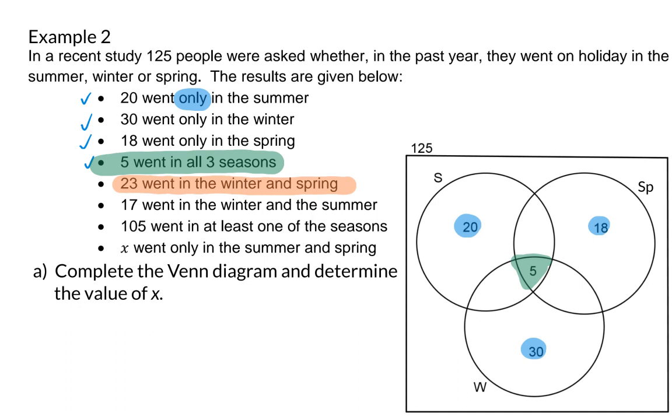These 23 people could then have gone on holiday only in winter and spring, or in winter, spring and summer. So I'm going to take the 23 and subtract the 5, and that will give me a value of 18 for those people who only went on holiday in winter and spring.